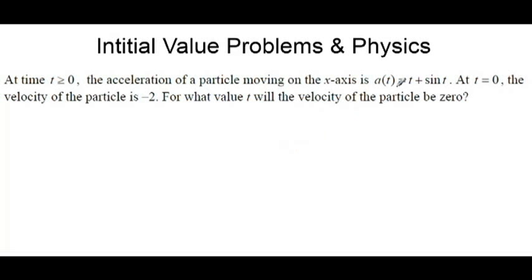However, if we just took the antiderivative of t + sin(t), we would have a c involved somewhere, and there would be a family of antiderivatives. The AP gets out of this by giving us an initial condition for velocity.